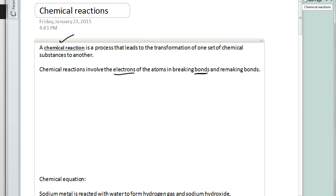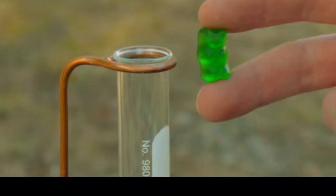So what I want to do now is show you a quick video of a chemical reaction. What we have here in front of us is a test tube and a little gummy bear. In the bottom of this test tube we have a chemical called potassium chlorate.